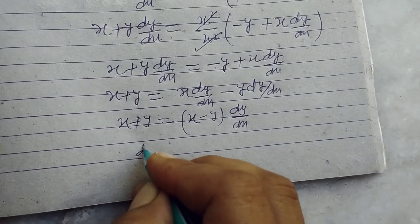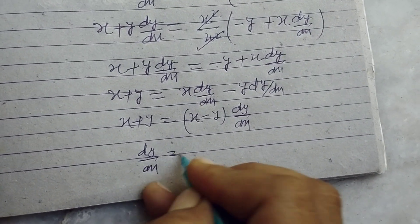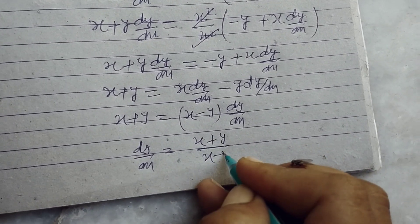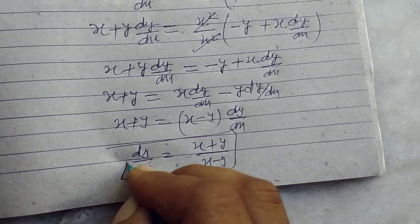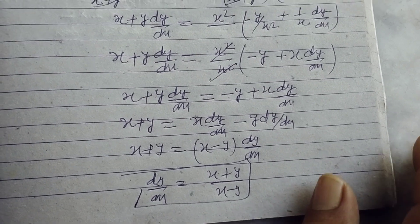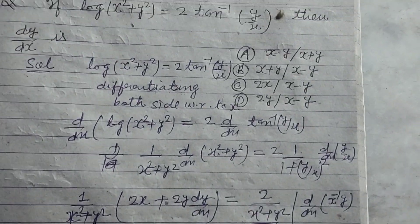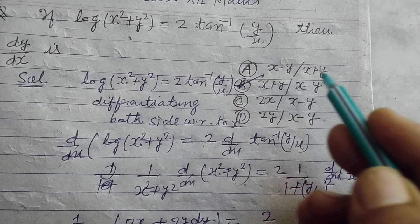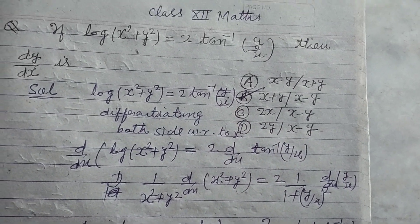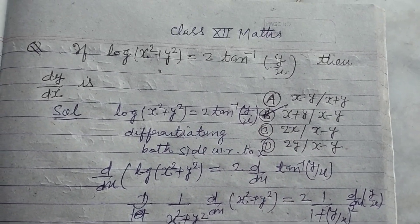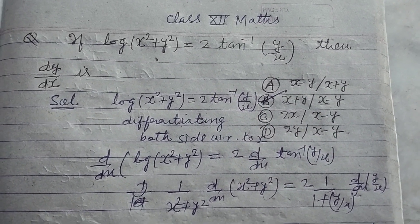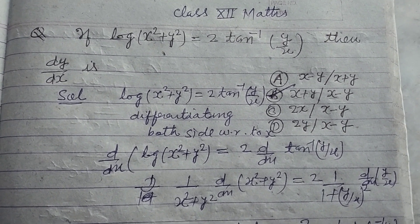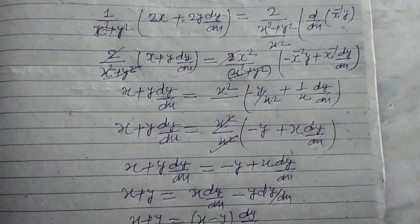This is our required answer. Therefore the answer of this question is (x + y)/(x − y), which is found in option B. Option B of this question is correct. I hope you got it. Please like the video, subscribe the channel. Thanks for watching.